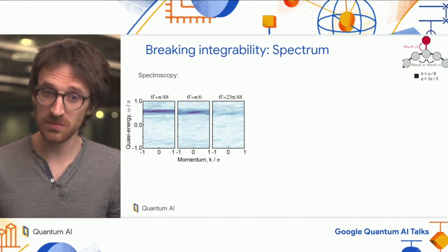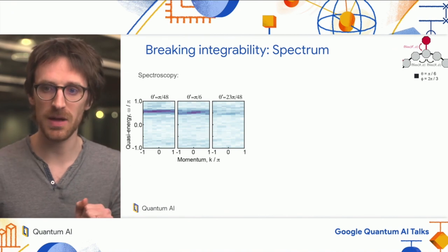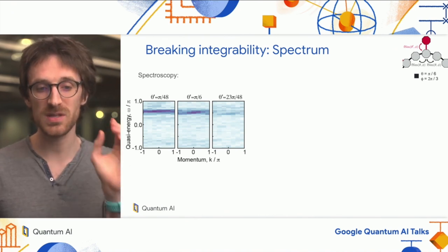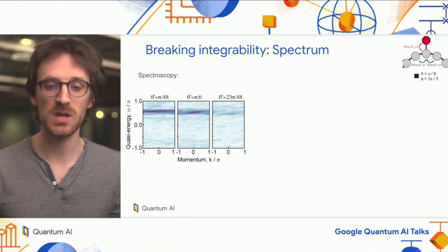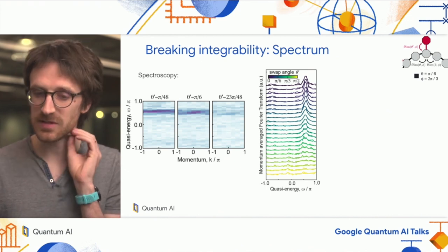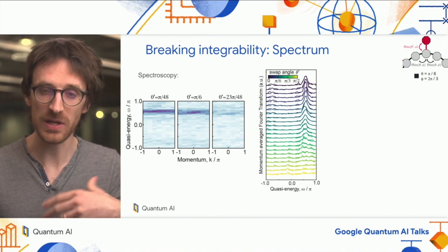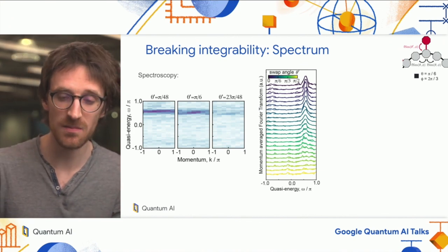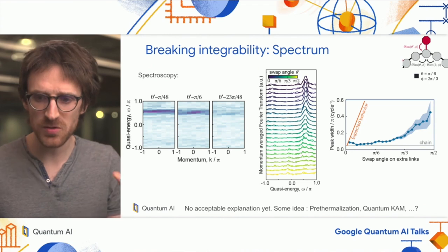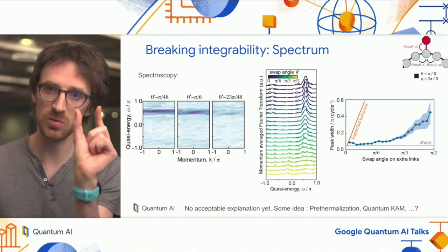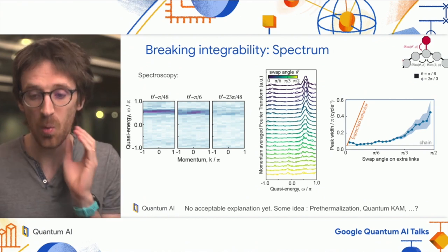We confirmed this with spectroscopy. For theta prime equal to pi over 6—the same swap angle on the extra site as on the main chain—we still have a peak in the spectroscopy for the three-photon bound state. Looking at how this peak disappears as we increase the strength of the integrability-breaking term, we see that the width of the peak is not very sensitive to the perturbation, and it survives up to quite a large angle of pi over 6.